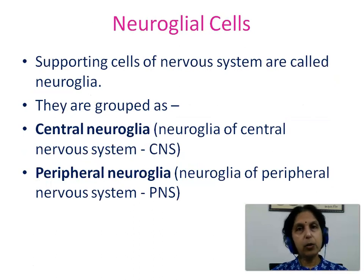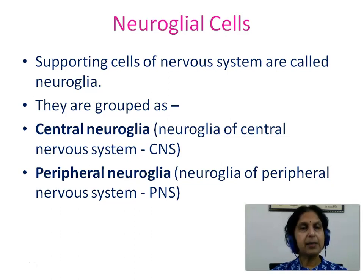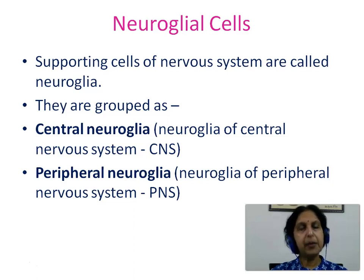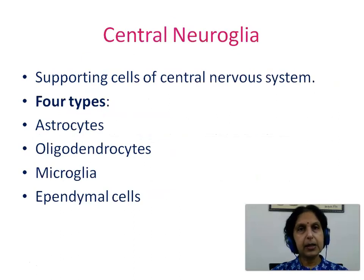Now we go on to see the neuroglial cells, which are the supporting cells of the nervous system. They are grouped as central neuroglia and peripheral neuroglia. The central neuroglia are neuroglia of the central nervous system, and they are of four types: astrocytes, oligodendrocytes, microglia, and ependymal cells.